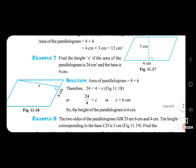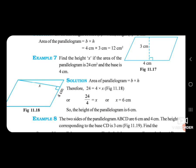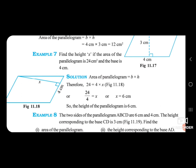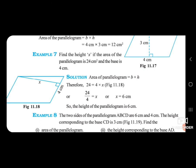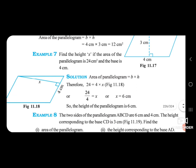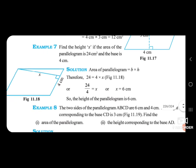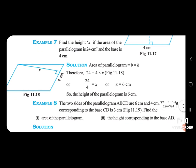Find the height x. In figure 11.18, the area of the parallelogram is 24 centimetres square and the base is 4 centimetres; find the height. Area of parallelogram = b × h, so 24 = 4 × x. Therefore x = 24 ÷ 4 = 6. The height of the parallelogram is 6 centimetres.